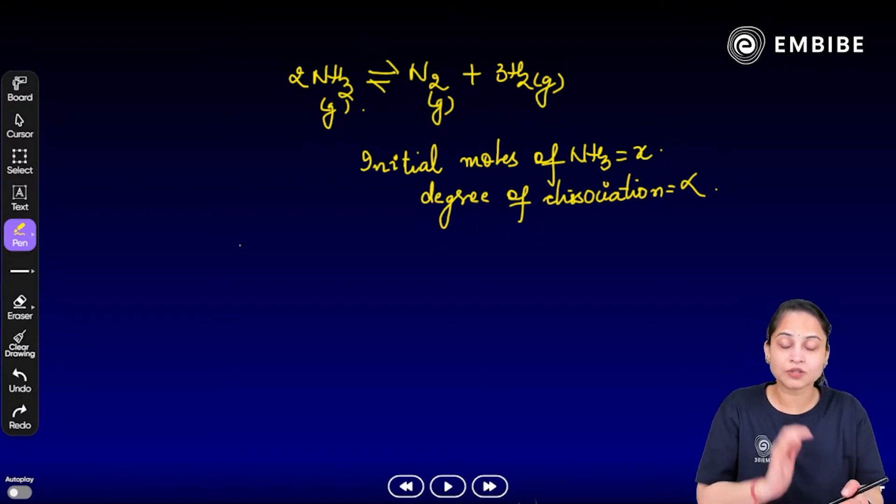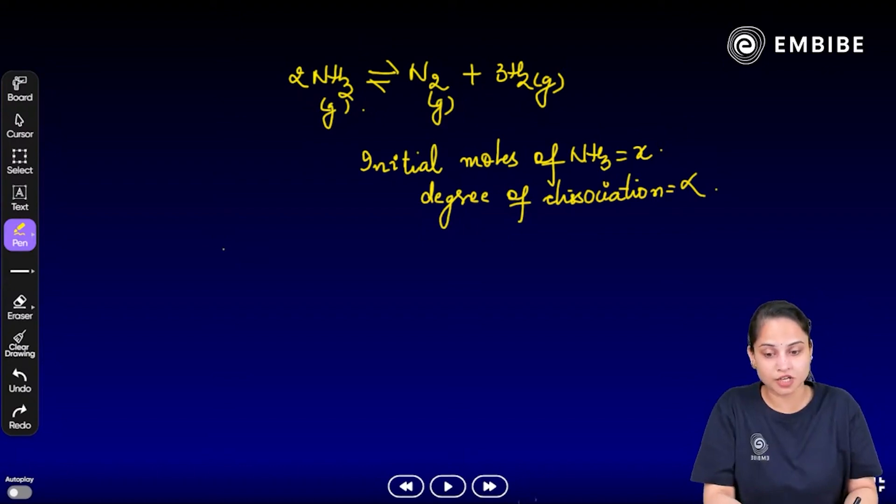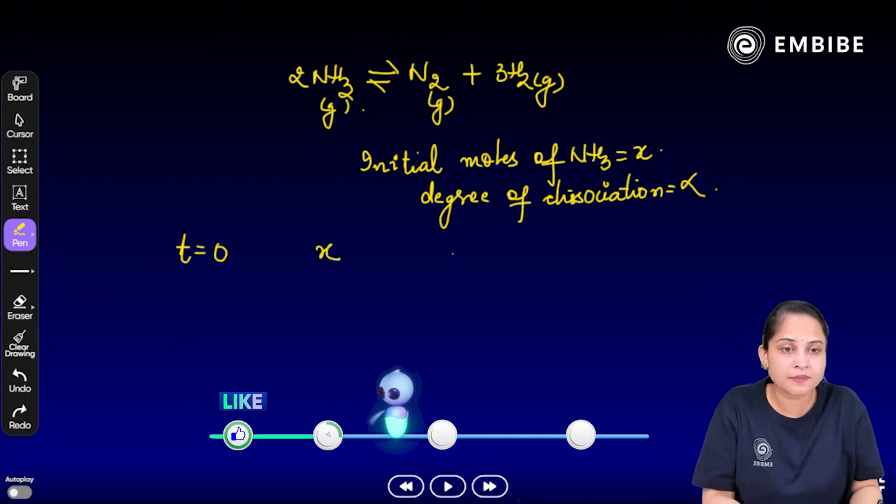I am asking you the number of moles of all the reactants and the products at equilibrium if we do have x initial moles of ammonia and alpha the degree of dissociation. So, the trick to it will be: at time t equals to 0, we are having initial moles of ammonia to be x, 0, and 0.